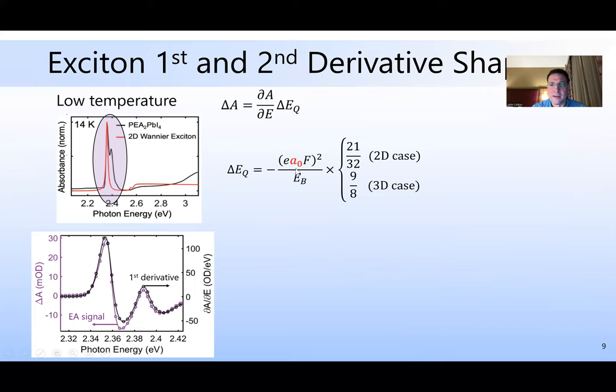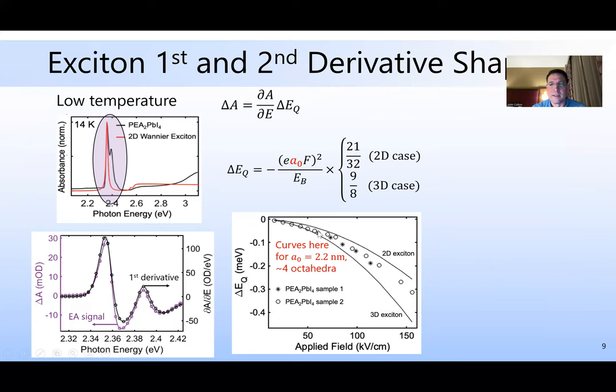In our case, although we're using a two dimensional theory, we actually expect it to be a little bit between the two dimensional case and three dimensional case because the quantum well region has some width to it. But we can use those as limiting cases and say that the actual case should be between the two, and that gives us a value of the Bohr radius of about 2.2 nanometers. We also can get the polarizability from the quadratic stark effect, and it has a value of 80,000 in units of angstrom's cubed.